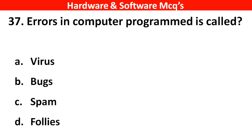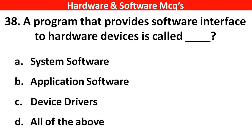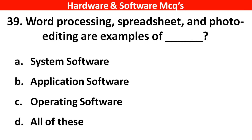Next question: Errors in computer programs are called ___. The right answer is option B — bugs. Next question: A program that provides a software interface to a hardware device is called ___. The right answer is option C — device driver. Next question: Word processing, spreadsheets and photo editing are examples of ___. The right answer is option B — application software.